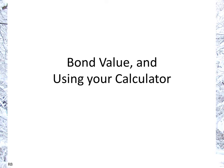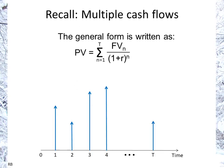This is bond value and we're going to look at using your calculator. Recall from the overview of calculating present value that the general form of the present value for multiple cash flows is the sum of all cash flows from 1 to t, divided by 1 plus r to the power of n, n being the number of periods.